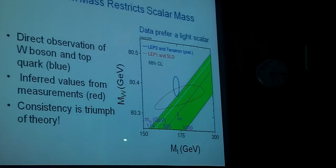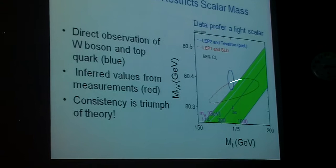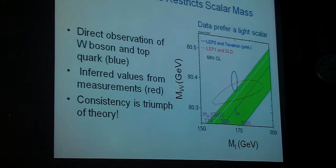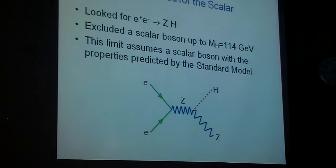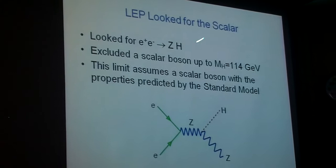114 GeV to a TeV scalar. So the data here, these two curves, the red and the blue, prefer a relatively light scalar. So let me say this in another way. We looked for this scalar at the electron-positron collider at CERN. It was an e+ e- collider looking for a Z plus a scalar, and it excluded a scalar up to a mass of about 114 GeV.